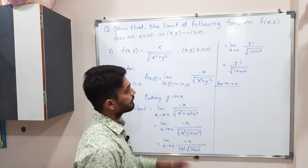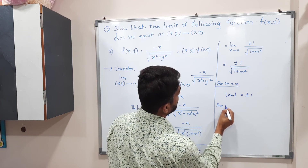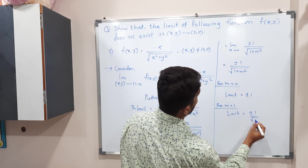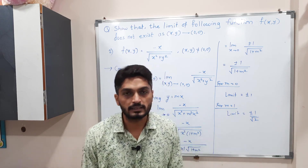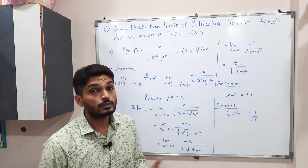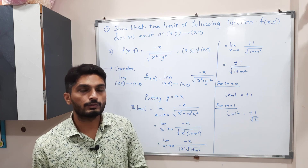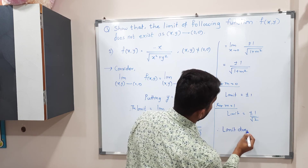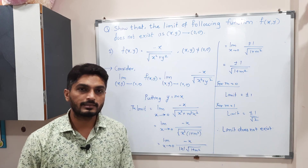For m = 0, the limit is ±1, and for m = 1, the limit is ±1/√2. We are getting different values of the limit, and a limit must be a unique fixed number. This is a contradiction to the fact that a limit is unique, so we declare that the limit does not exist. Therefore the limit does not exist, and that is how we proved it. Make a screenshot of this.